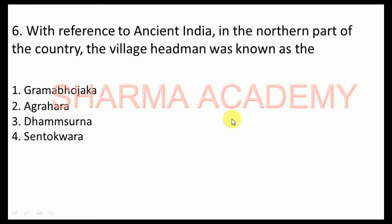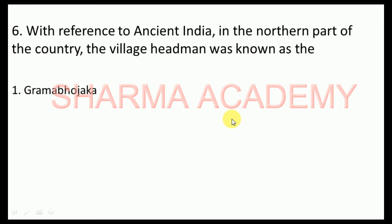With reference to ancient India, in the northern part of the country, the village headman was known as — Gramabhojaka, Agrahara, Dhammasurna, or Shentokwara? The correct option is Gramabhojaka. Usually men from the same family held this position for generations. The Gramabhojaka was often the largest landowner; he had slaves and hired workers to cultivate the land. As he was powerful, the king often used him to collect taxes from the village. He also functioned as a judge and sometimes as a policeman.